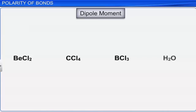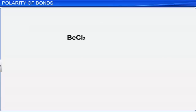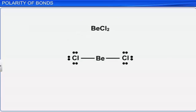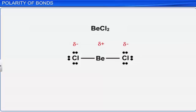Let us calculate the dipole moment of some molecules. Consider the beryllium chloride molecule. It is a linear molecule with a bond angle of 180 degrees. Two beryllium-chlorine bonds are present in opposite directions. As chlorine is more electronegative, the shared electron pair moves closer to chlorine, giving it a partial negative charge while beryllium acquires a partial positive charge. As the two equal bond dipoles are in opposite directions, their vector sum is zero, so the net dipole moment is zero.